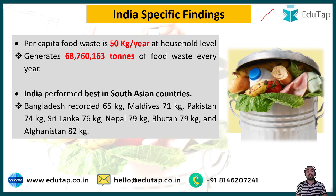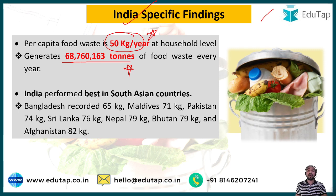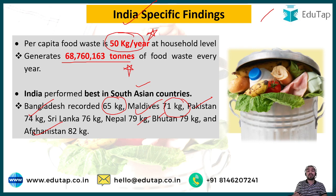For India-specific findings, India's per capita food wastage is 50 kg per year at the household level, and India generates 68.76 lakh tons of food waste every year. Compared to other South Asian nations, India has performed the best — Bangladesh records 65 kg per year, Maldives 71 kg, and Pakistan, Sri Lanka, Nepal, Bhutan, and Afghanistan all generate 70 kg or more of food waste per year.